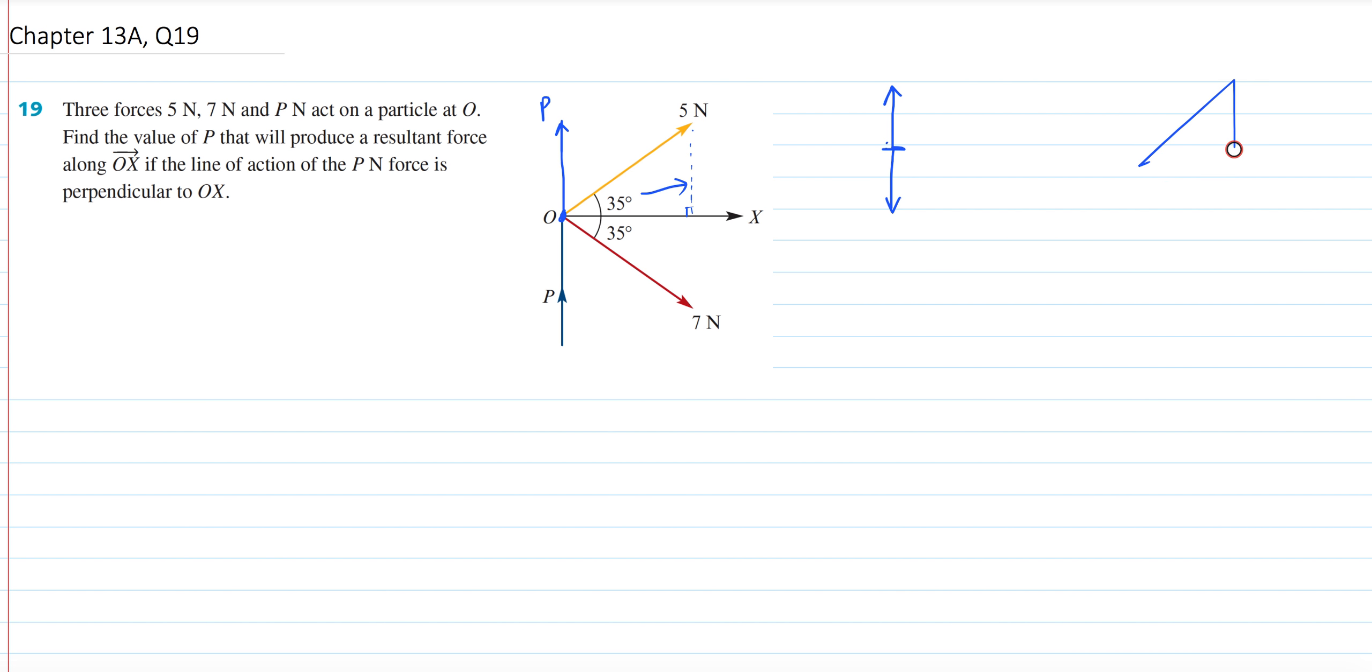So just using trig. If you have your hypotenuse, which is 5, and you've got your angle 35 degrees, and you want to find, let's say, Y, which is your vertical force, then all you need to do is sine 35 degrees equals to Y over 5, and then you want to solve for Y, which is your vertical force, then that will just be 5 multiplied by sine of the angle, so that's 35 degrees.